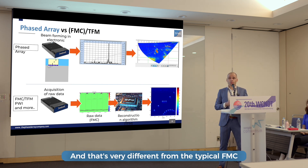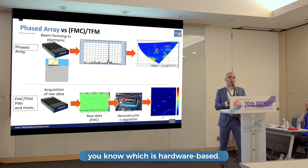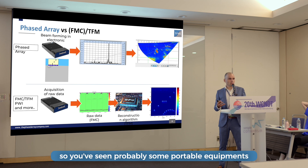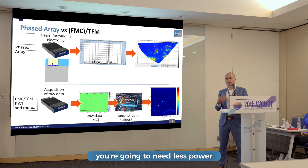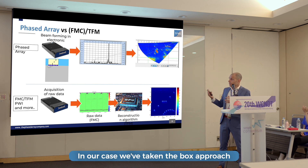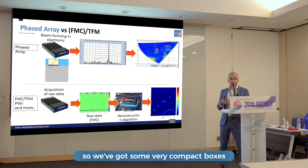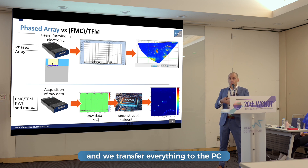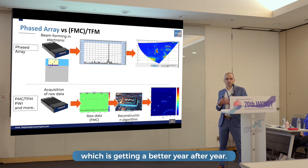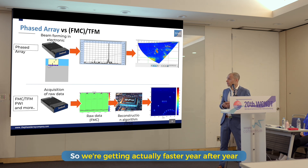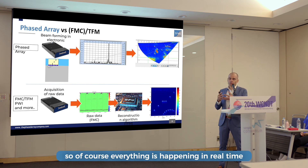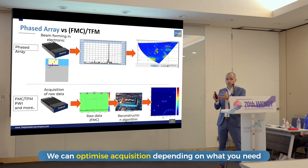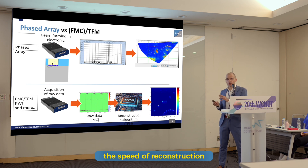In our case we've taken a special approach: we do the acquisition in the electronics and then transfer all the data to the PC, where we use a GPU — very good at handling a lot of computing in parallel. That's very different from typical hardware-based FMC approaches taken for portable equipment to minimize power consumption. In our case we use compact boxes for acquisition and transfer everything to the PC where the GPU gets better year after year, making us faster year after year. Separating the two processes lets us really optimize both acquisition and reconstruction.